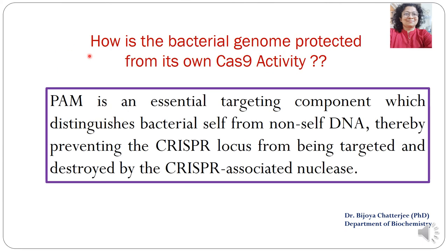This leads to the next question: since Cas9 is an endonuclease, how is the bacterial genome protected from its own Cas9 activity? The answer is that PAM is an essential targeting component which distinguishes bacterial self from non-self DNA.